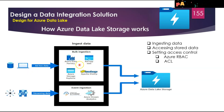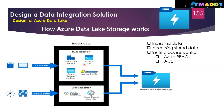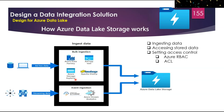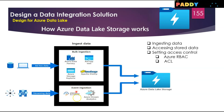The second ingestion type is relational data. Azure Data Factory is the best service for enabling the transfer and storage of relational data — including Cosmos DB, SQL Database, or Managed Instance. The third ingestion type is streaming data. For streaming, you can use Apache Storm on Azure HDInsight or Azure Stream Analytics services.